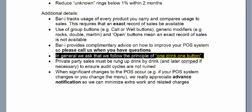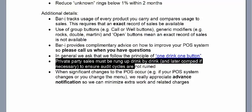We follow the principle of one drink, one button — you can look up this article online. Regarding private parties: they have the ability to ruin an entire cycle. The ideal way is to ring up drinks individually during the party. It reinforces careful ringing habits. Afterward, if you comp the tab — which wipes out the dollars — do not void it, because you'll erase all record. Comping it means you don't have to tie up the dollars, but there'll be an exact record of precisely what drinks were served, so you don't have to remember what was poured during the party. That's absolutely the best way: ring up drinks individually and comp them after the event.